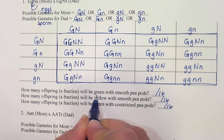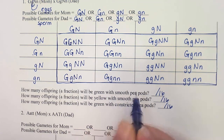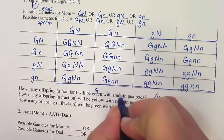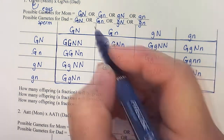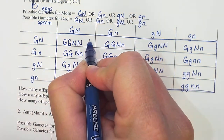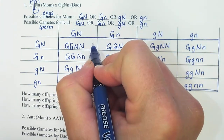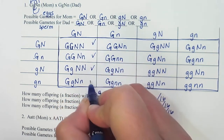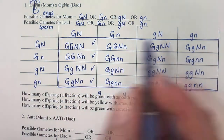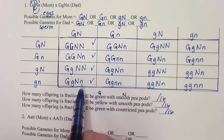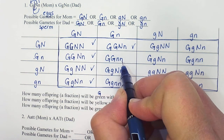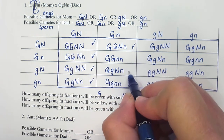The first characteristic is green with smooth peapods. Green and smooth are both dominant, so I'm looking for at least one big G and one big N. I'll check them off as I go. Big G and big N, big G and big N — it doesn't matter what the second letter is because of the law of dominance. I'll count all boxes with at least one big G and at least one big N.